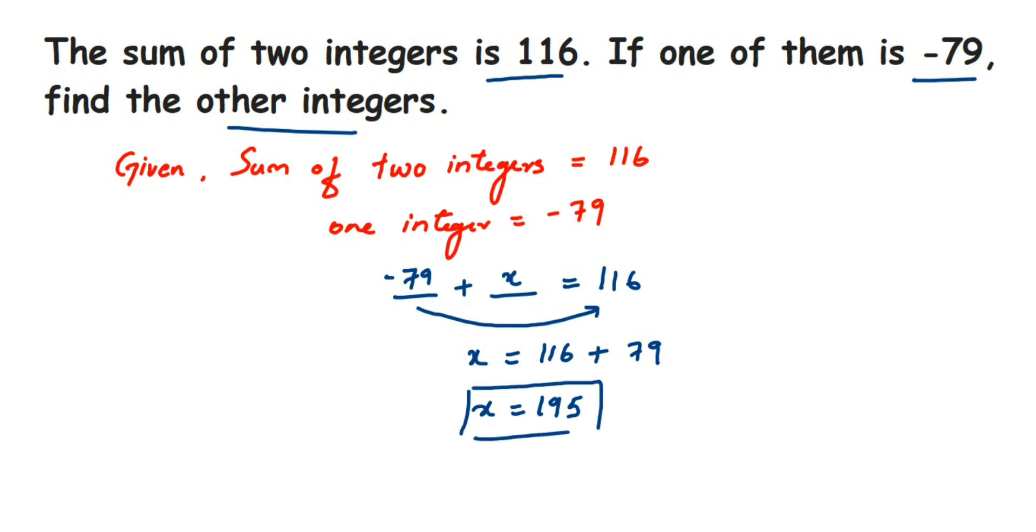So that said, the other integer in this question will be 195. This was a simple question. So I hope it is clear. So we can just conclude it. Therefore, other integer is equal to 195. The sign will be positive. So in case you have other questions or doubts, you can drop a comment. Thank you so much for watching.